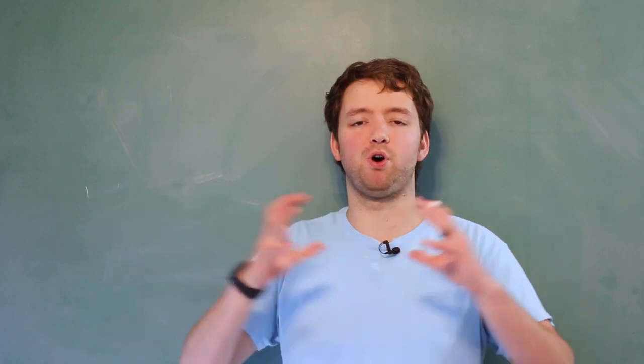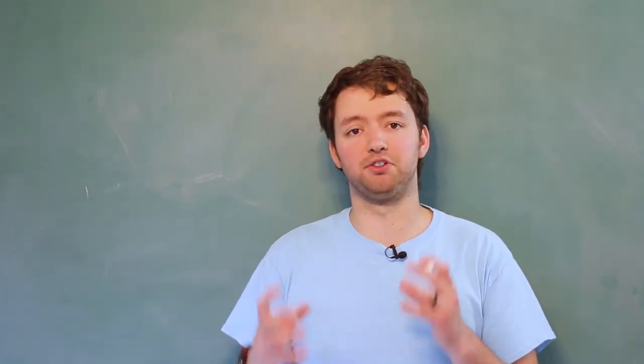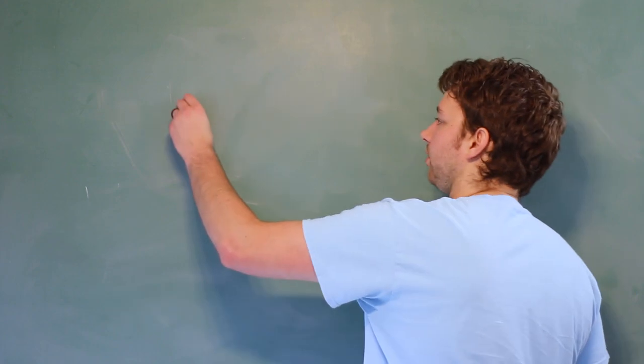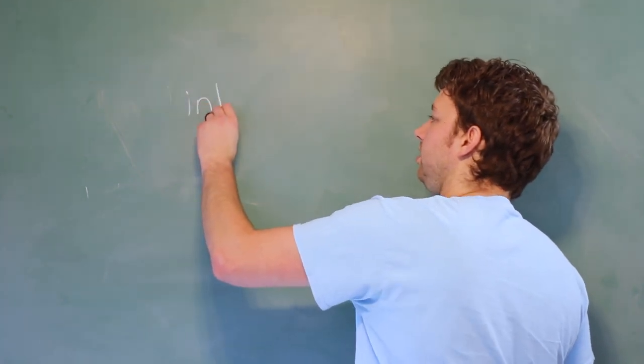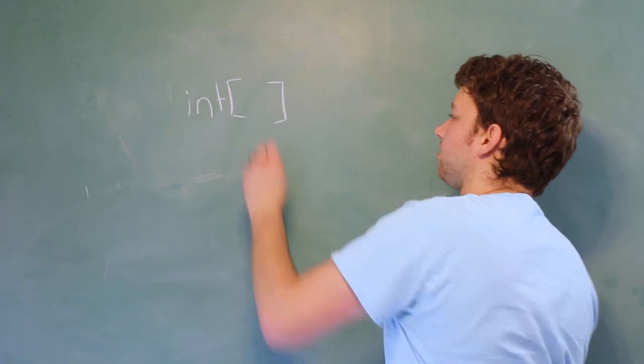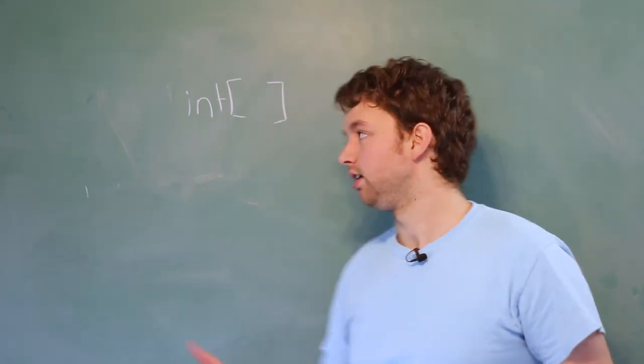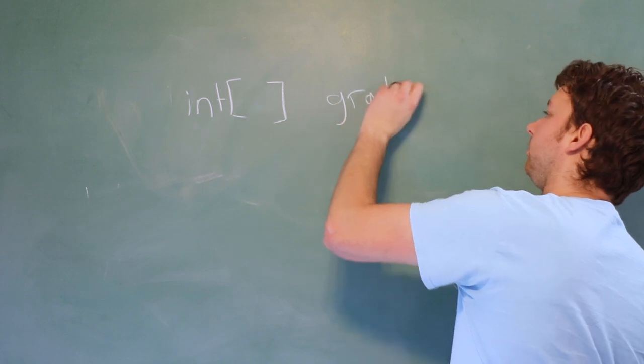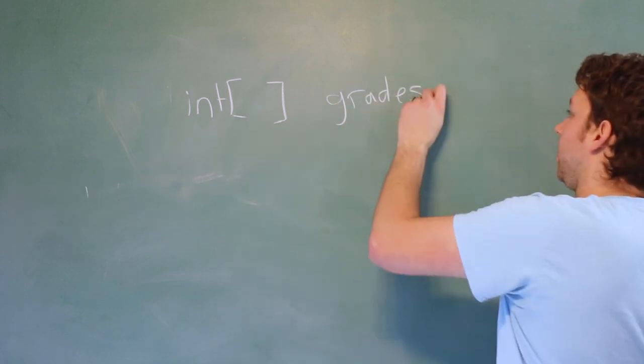Wouldn't it be nice if we could just put all of those pieces of data together in one data type? Well, we actually can do that, and it's going to look something like this. You're going to say int, because we're storing integers, and you're going to use square brackets. This is how we indicate it's an array. Then we give it a name. So, we can say grades. And there we go. We just declared an array.